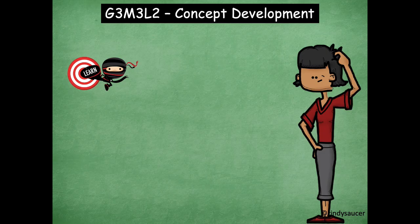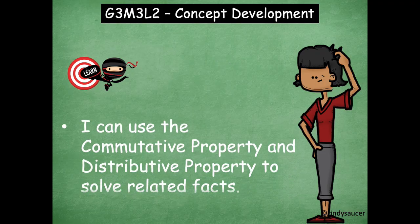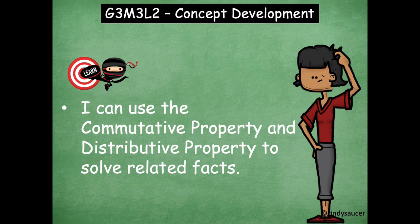Hey boys and girls, it's Mrs. Walker. For our lesson today, we're going to talk about how we can use different multiplication properties to help us solve related facts. Our learning goal for today says: I can use the commutative property and distributive property to solve related facts.